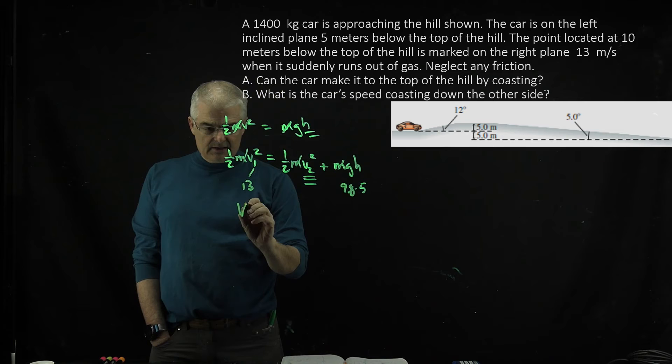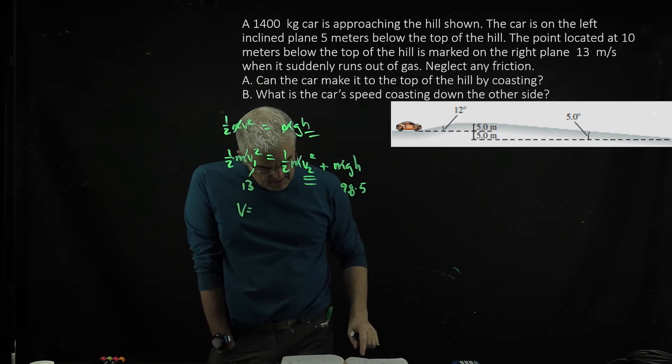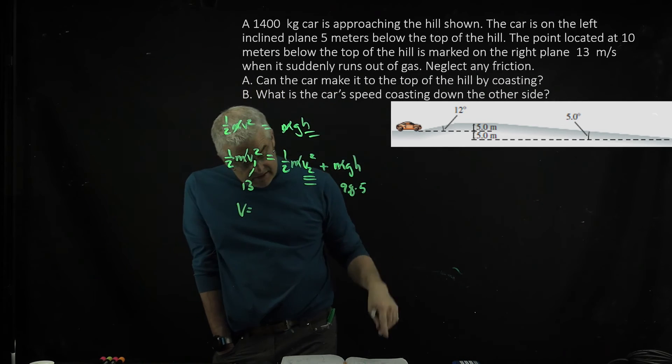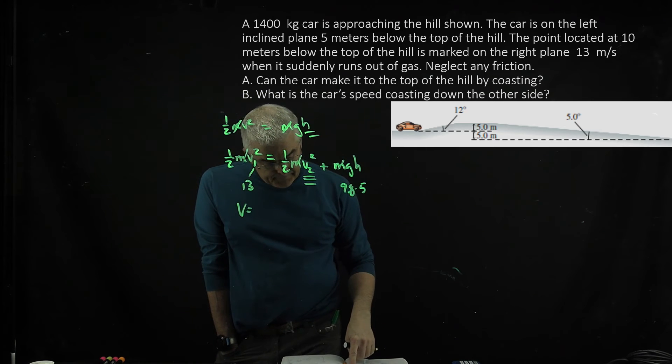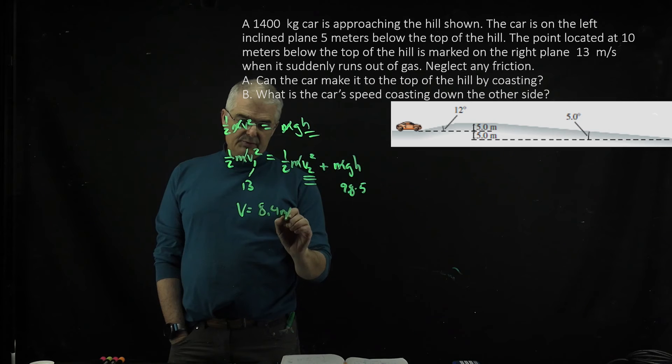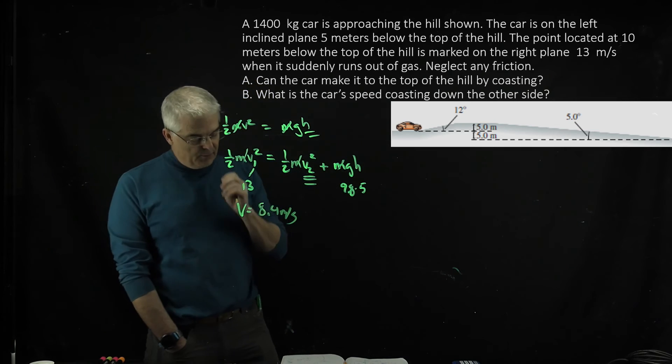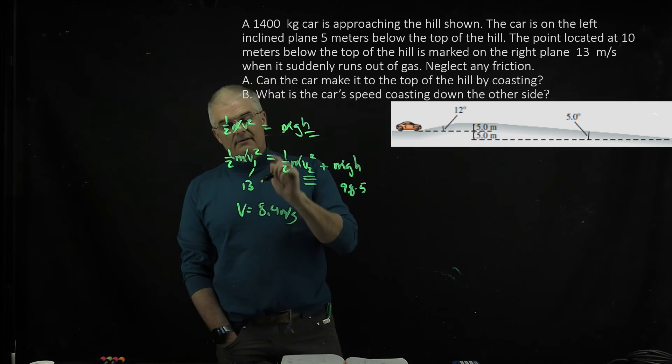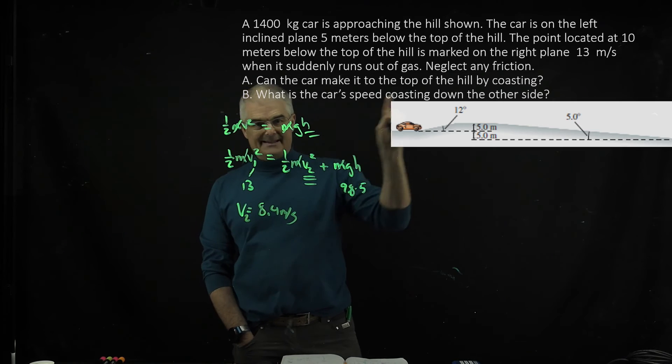When you get the velocity at the top of the hill, his velocity has decreased from 13 to 8.4 meters per second. When you plug all the numbers in, you get 8.4 meters per second. That's his velocity 2 at the top of the hill.